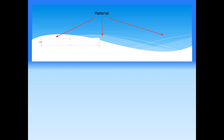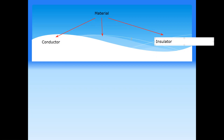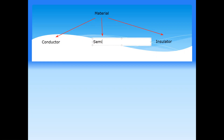Materials that do not allow electricity to pass through them are called insulators. Materials that allow only a very small amount of current — like milliampere or microampere — to pass through are called semiconductors. Materials can therefore be classified by electrical conductivity: conductors allow electricity to pass, insulators do not, and semiconductors allow only a small amount.